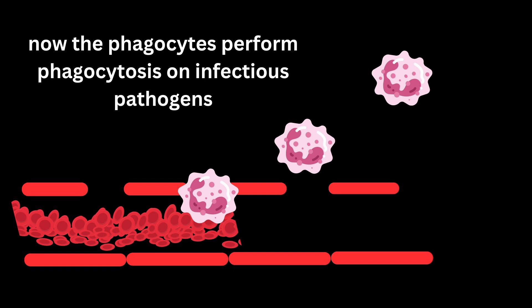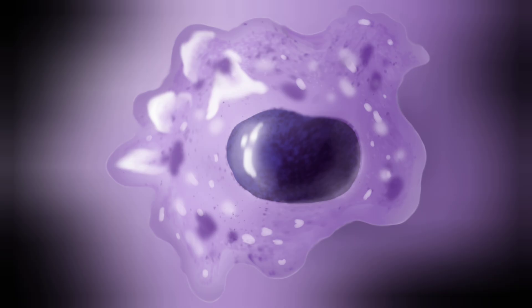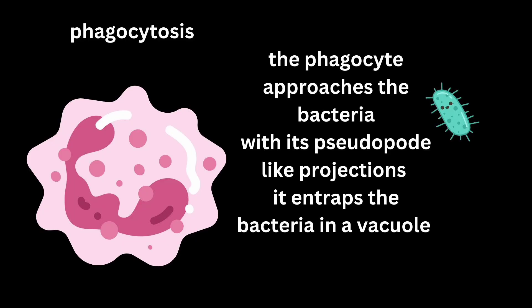Now let's move to phagocytosis. Phagocytosis is the engulfment of pathogenic bacteria or viruses present at the site of injury, performed by phagocytic cells including neutrophils and macrophages. These cells migrate towards the site of injury, ingest those microbes, and kill them. The vascular events of inflammation — increased blood flow, retraction of endothelial cells, and escape of cells from blood into tissue spaces — precede these cellular events. The phagocyte approaches the bacteria with pseudopod-like projections and entraps the bacteria in a vacuole — a type of endocytosis.